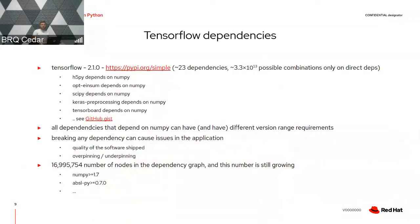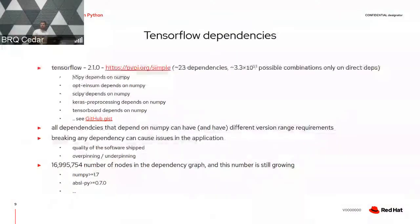If you take a look at the direct dependencies of TensorFlow, we can construct something like 3 multiplied by 10 to the power of 13 possible combinations of packages in different versions that can be installed. Of course this number varies based on the actual resolution process, and if you include also transitive dependencies, things get more complicated. You can see that NumPy is introduced into the TensorFlow stack by different dependencies, either direct or transitive ones. And if there is an issue in NumPy, there can be some bug in the software. You can break the application; it can misbehave. If you install the proper version of NumPy, then the quality can grow.